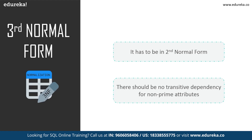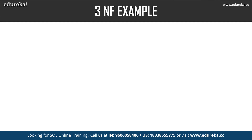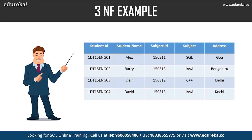Third normal form was designed to eliminate undesirable data anomalies, reduce the need for restructuring over time, and make the data model more informative. In the example table, student ID determines subject ID and subject ID determines subject — therefore student ID determines subject via subject ID. This implies transitive functional dependency, so this table does not satisfy third normal form.